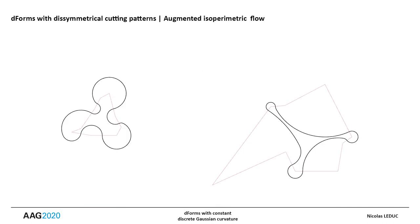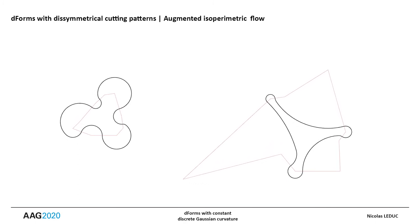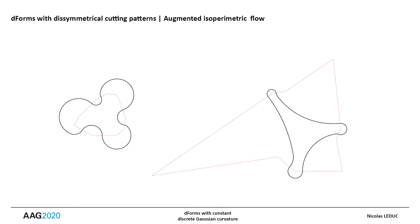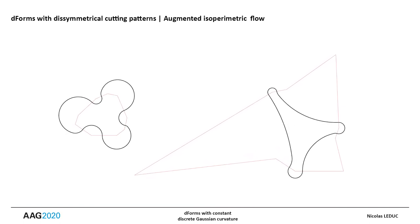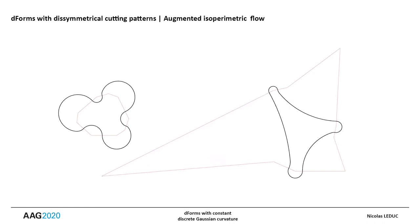However, the isometric flow applied to the evolute of the first curve does not ensure the closure of the second one. It is therefore necessary to augment the constraints of the isometric flow by integrating the closure conditions of the second curve. The details of that process are described in the article.